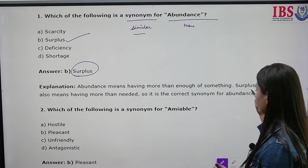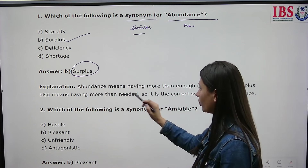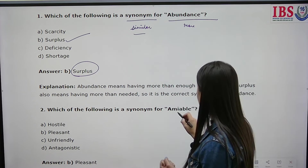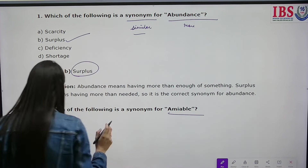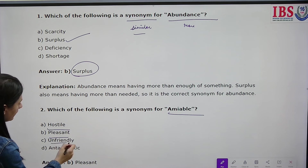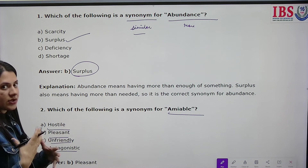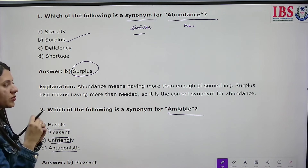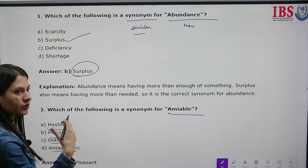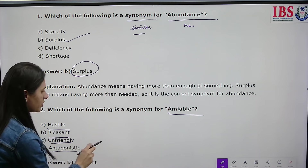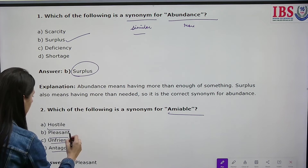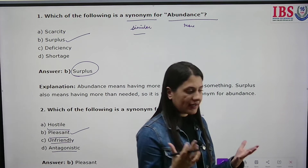Which of the following is a synonym for 'amiable'? The options are hostile, pleasant, unfriendly, and antagonist. Hostile means someone who can't tolerate others. Pleasant means someone who makes others happy. Unfriendly means not friendly at all — like a villain. Amiable means pleasant, someone who is agreeable and pleasing to everyone.